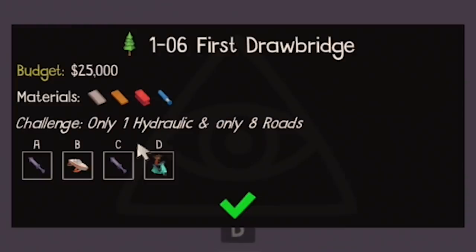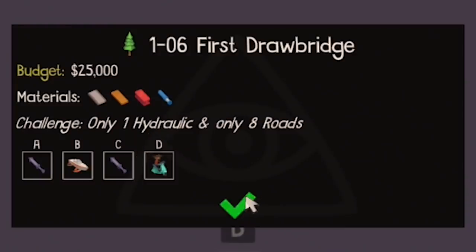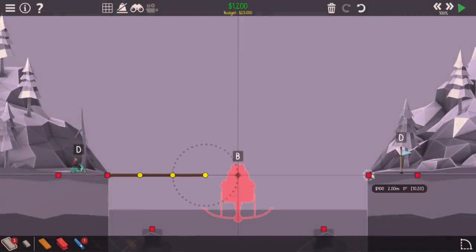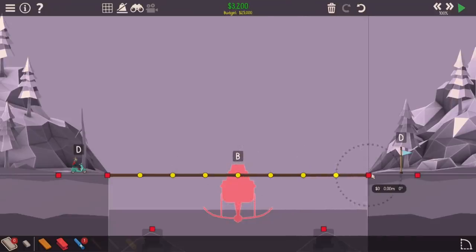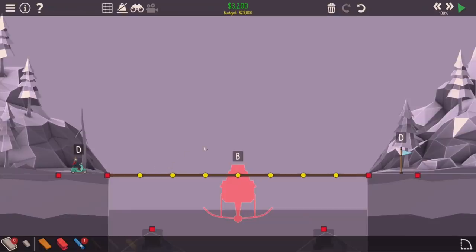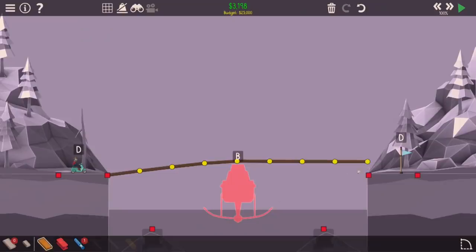The first drawbridge. Only one hydraulic and only eight roads. That's kind of a nightmare because eight roads is going to get you as far as... Oh, it gets all the way across, so it definitely has to be a drawbridge though. Unless we can drop it. We can definitely drop it. I'm not building a drawbridge.